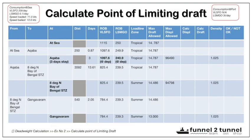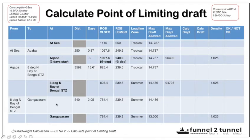A detailed table has been devised to calculate the point of limiting draft. The first column is 'From' — the position from where the ship is moving. The second column is 'To' — the point to which the ship is going. The third column is 'At' — the point of concern or interest in the voyage, for example: the place of departure, the loading port, points where load line zones change, and the port of arrival for discharge.